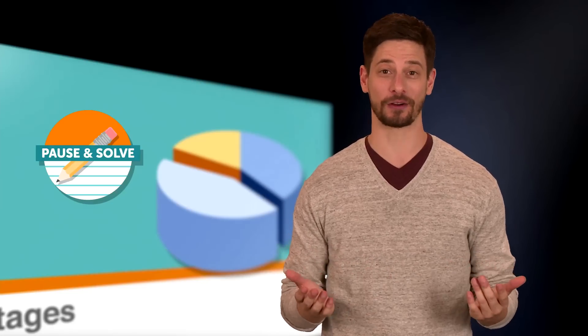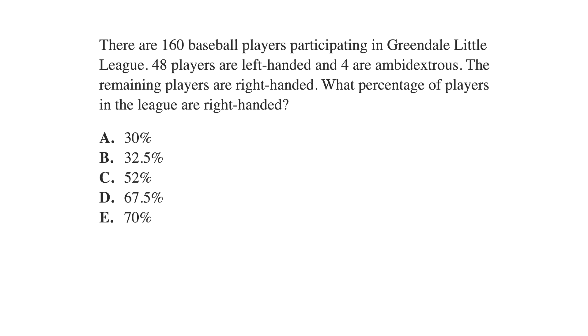When you're done, restart the video and we'll go through it together. Here's the problem: There are 160 baseball players participating in Greendale Little League. 48 players are left-handed and 4 are ambidextrous. The remaining players are right-handed. What percentage of players in the league are right-handed?